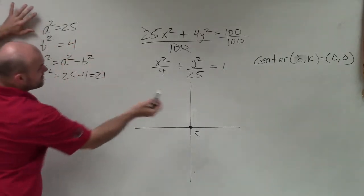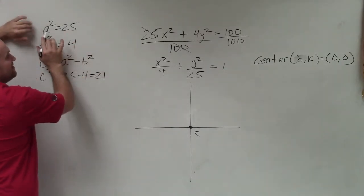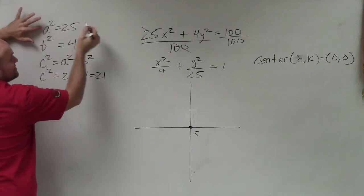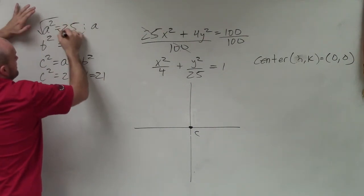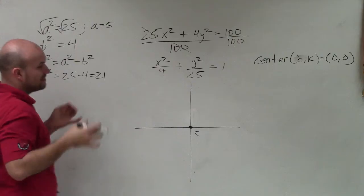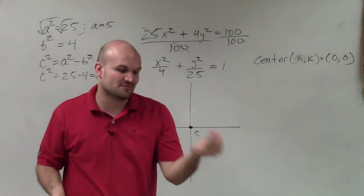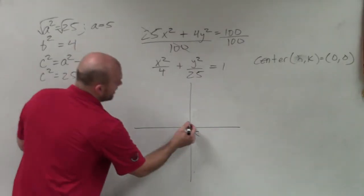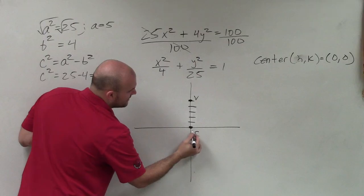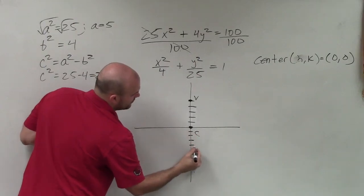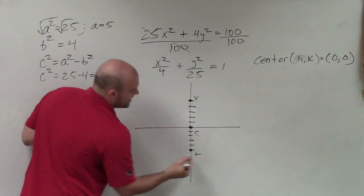Now, since I know it's vertical, it's going to be going up or down. My vertices and my foci are all going to line that line. Now, the distance from the center to my vertices is going to be the value of a. Well, right now, I just know what a squared is. So to find a, I take the square root of both sides. And a equals 5. So again, that's an absolute distance from the center to the vertices. So I'm going to go up 5. 1, 2, 3, 4, 5. That's one vertex. And then down 5. 1, 2, 3, 4, 5. That's my second vertex.